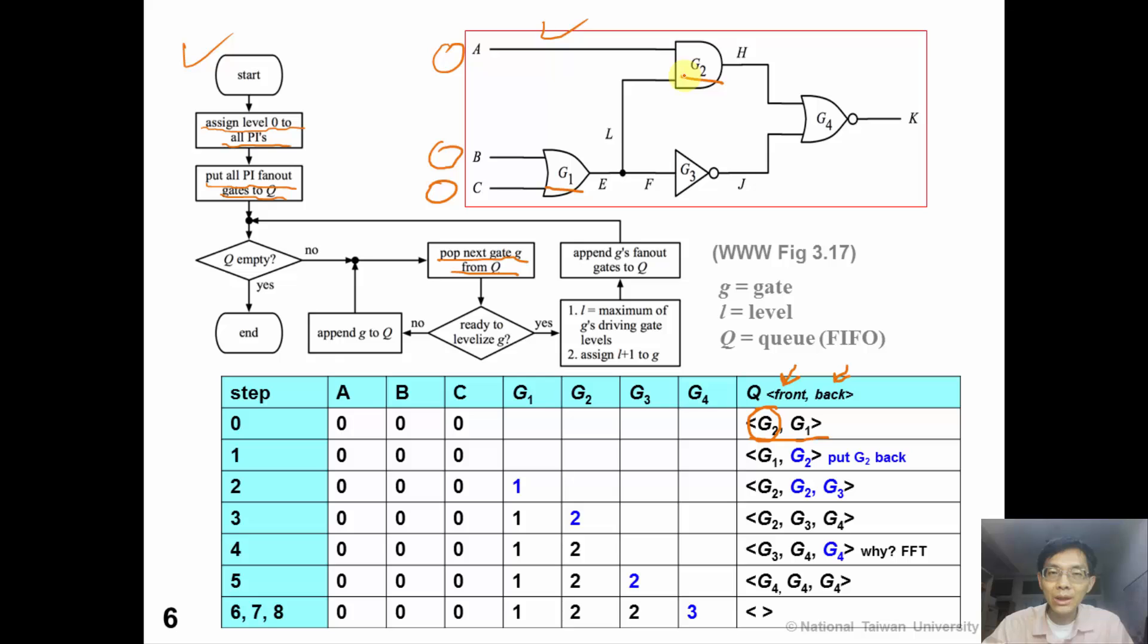G2 is not ready for levelization, since we don't know the level of G1. So according to the algorithm, we will put G2 back to the queue.